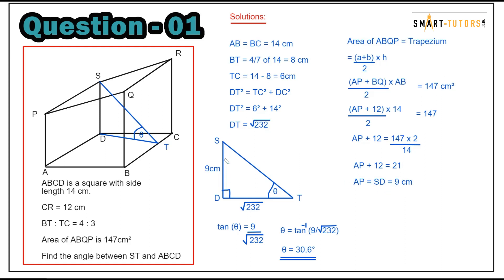AP equals 9 means SD equals 9 also. Once you find AP or SD, you can use the SDT right angle triangle. SD is given, DT is given, so tan theta equals opposite over adjacent, which is 9 over square root of 232. Take the inverse function. The answer to one decimal place is 30.6 degrees.